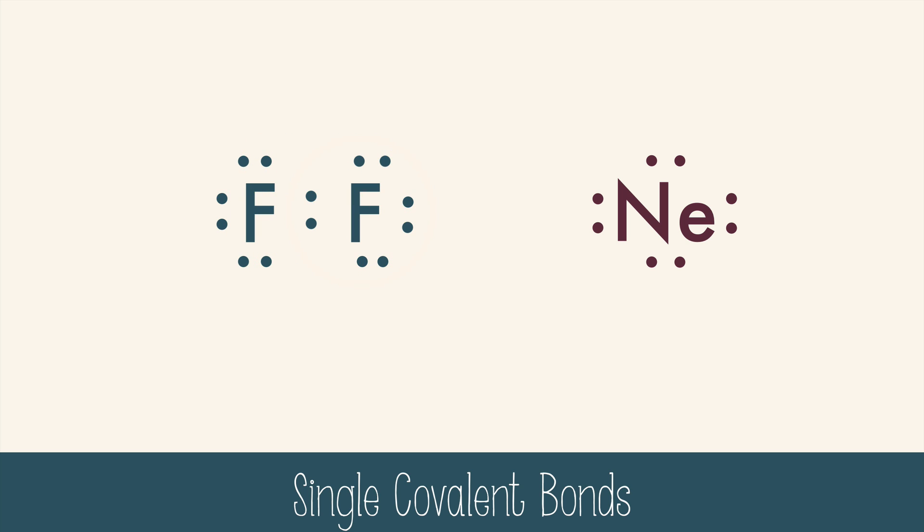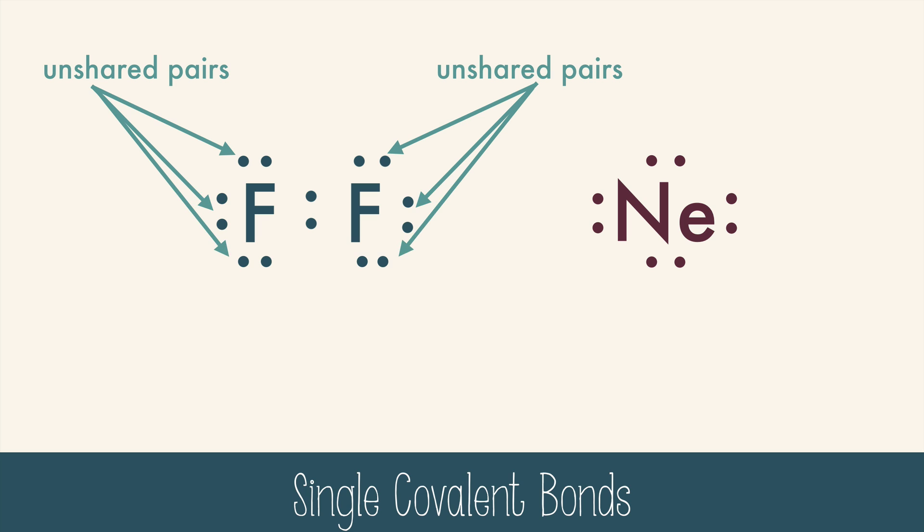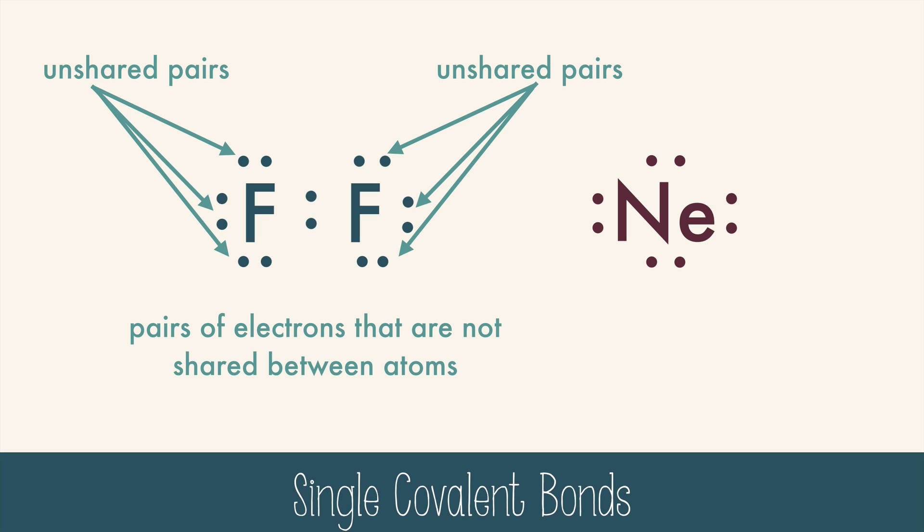Notice that there are lots of unshared pairs of electrons around fluorine. These are pairs of electrons that are not shared between atoms — they're not part of a covalent bond. They're also known as lone pairs or non-bonding pairs.